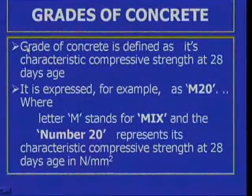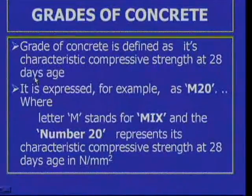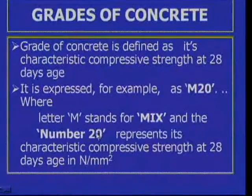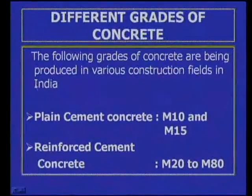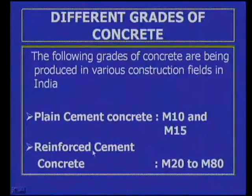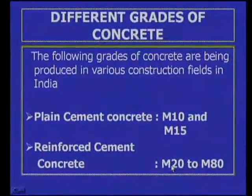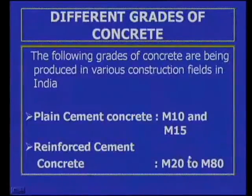Grade of concrete is defined as its characteristic compressive strength at 28 days. It is expressed as, for example, M20, where M stands for mix and the number 20 stands for the compressive strength at 28 days in N/mm². Different grades exist: for plain cement concrete M10 and M15, and for reinforced cement concrete M20 to M80. From durability considerations, the minimum grade for plain concrete is M15 and for RCC it is M20.